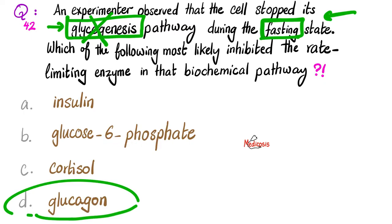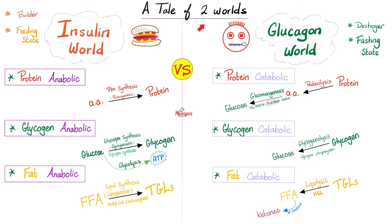Glucose-6-phosphate also stimulates glycogenesis because it came from glucose and is on the path to making glycogen. Cortisol is an exception: although it belongs to the glucagon land, cortisol actually stimulates glycogenesis. We divide metabolism into two big worlds — the insulin world in the feeding state, and the glucagon world in the fasting state.